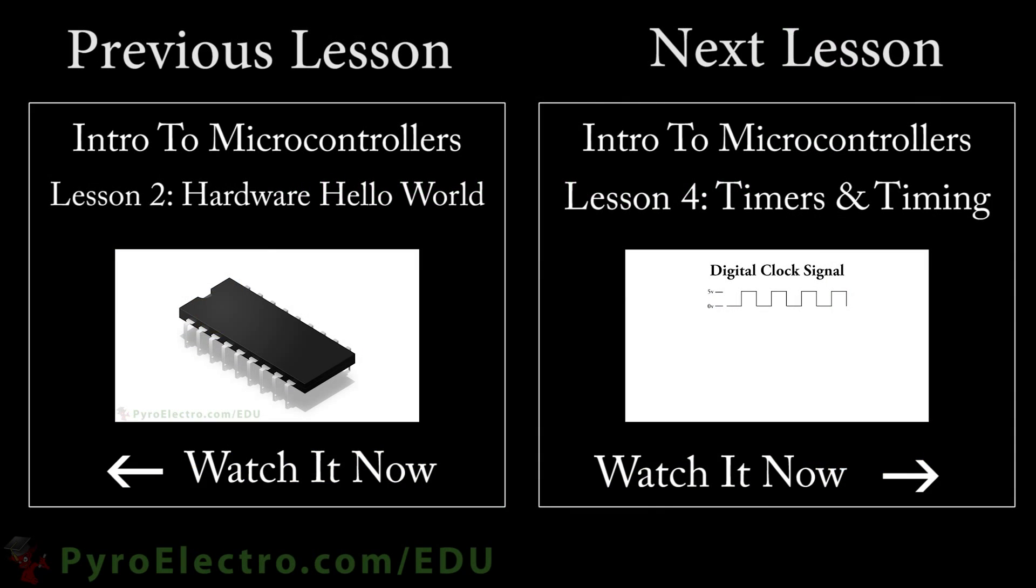The type of input and output we just learned about is often referred to in the embedded systems world as general purpose I.O. It's a basic necessity, but only offers us basic functionality. So continue on to the next lesson where we explore how to use timing and timers to create perfectly timed output from a microcontroller.